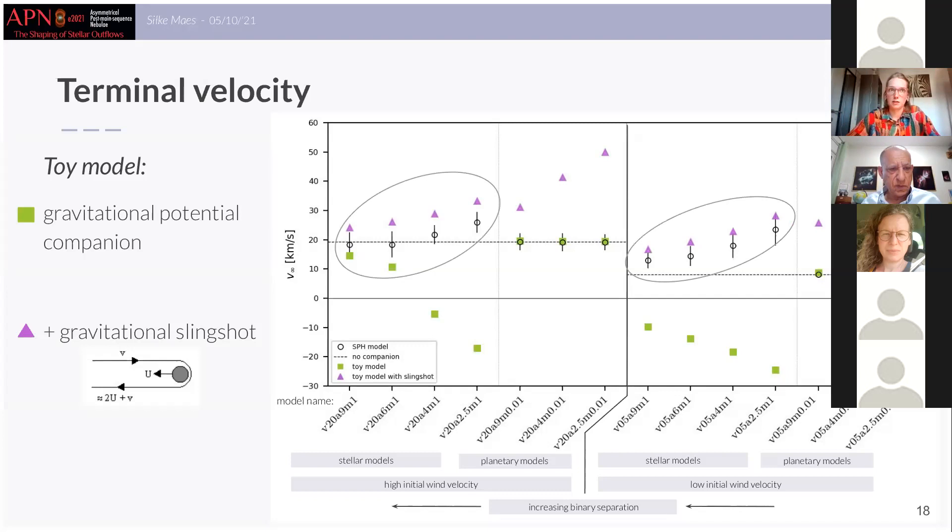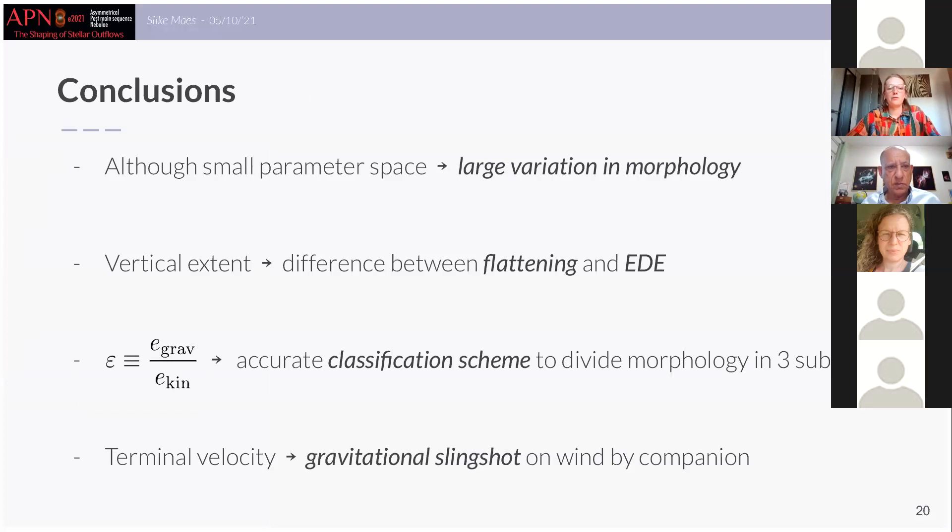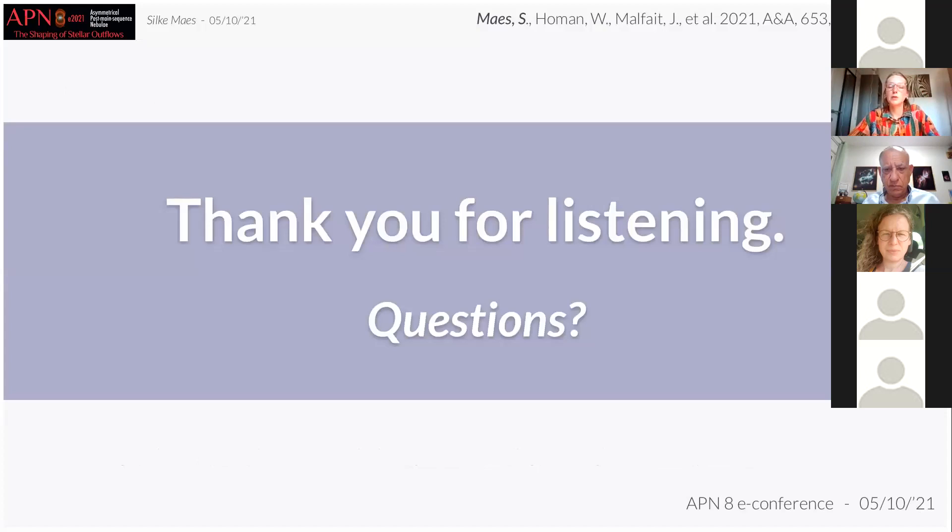So to conclude my talk and therefore also our paper: We have found that for companion perturbed HB outflows, a small parameter space already gives a large variation in morphologies and that we can reach quite complex and perturbed morphologies already for very simple systems. From the analysis of the vertical wind extent, we found that we can differentiate between a flattening and an equatorial density enhancement, which are both caused by a distinct mechanism. Then we also have found a parameter which we call epsilon that sustains an accurate classification scheme. And lastly, we can conclude that the terminal wind velocity is affected by a companion, mainly due to the gravitational slingshot mechanism. So I thank you all for listening and I'll be happy to take your questions.